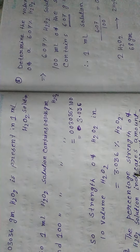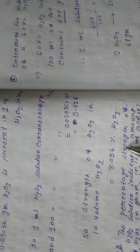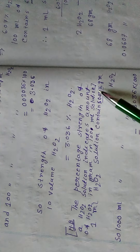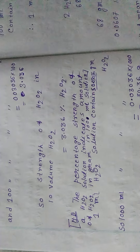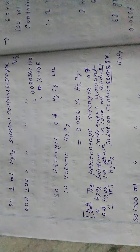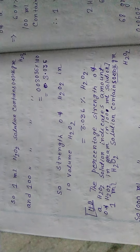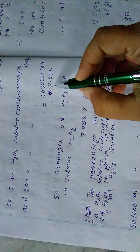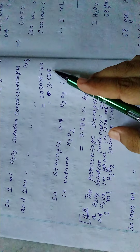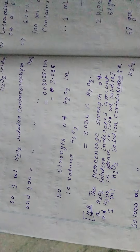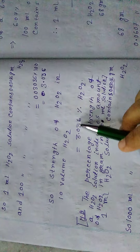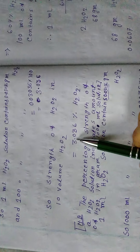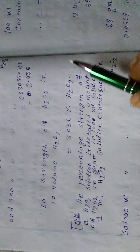The percentage strength of a H2O2 solution indicates the amount of H2O2 in grams in 100 mL of solution. So from 100 mL of this H2O2 solution, we get 0.03036×100 = 3.036 gram H2O2. That means this is the percentage strength of this H2O2 solution. So it indicates that 10 volume H2O2 equals 3.036% H2O2.